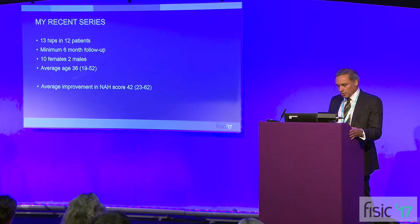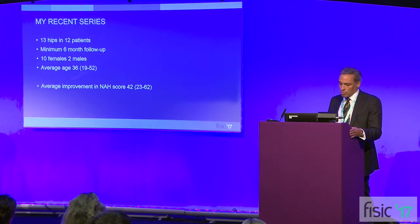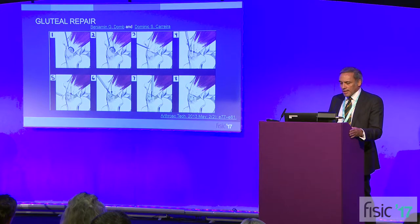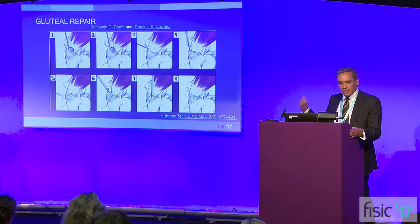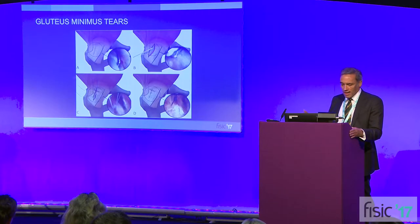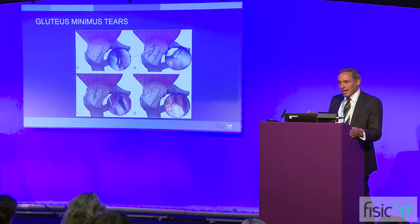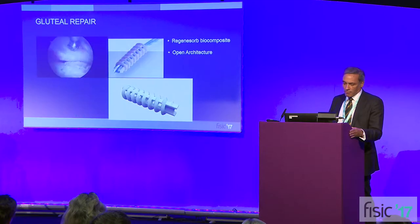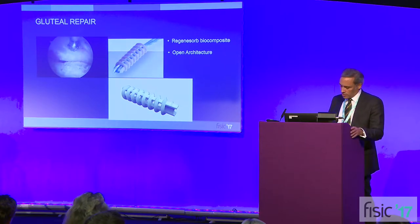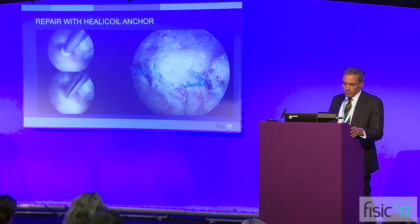You can repeat the dynamic assessment again to check for ongoing tightness, and if necessary you've got the tendon of gluteus maximus there that you can release. In a recent series I was able to show an average improvement in the non-arthritic hip score of about 42 for my patients. With gluteal tears, the repair technique has been very nicely outlined by Ben Doom — it's all about finding that cuff and bringing it back down. With gluteus minimus tears you have to go through an intact gluteus medius to get to the gluteus minimus, using open architecture anchors.